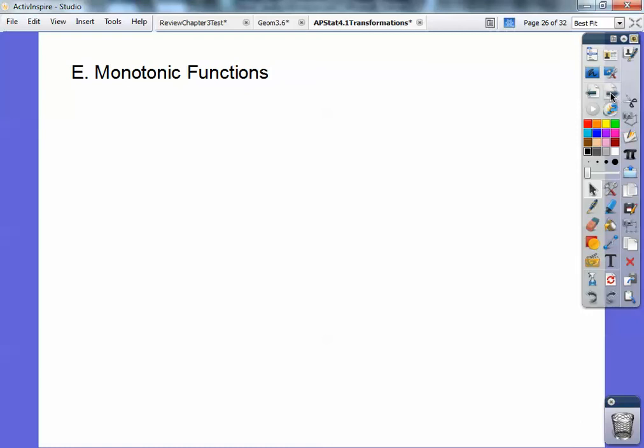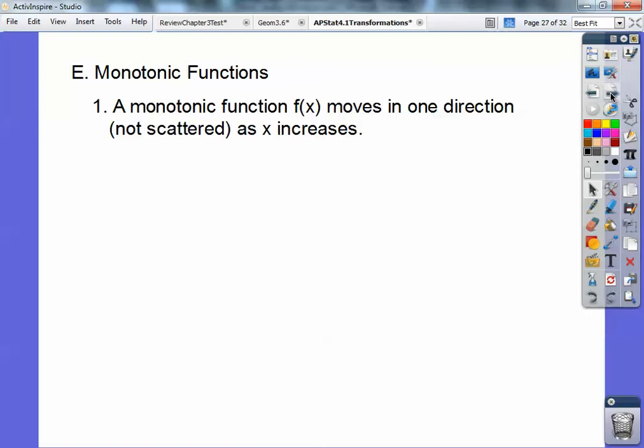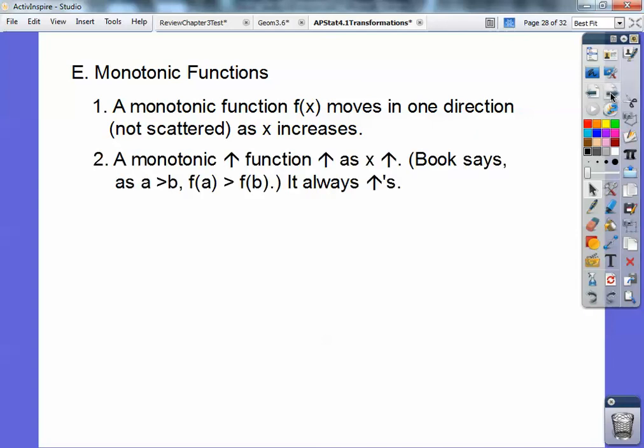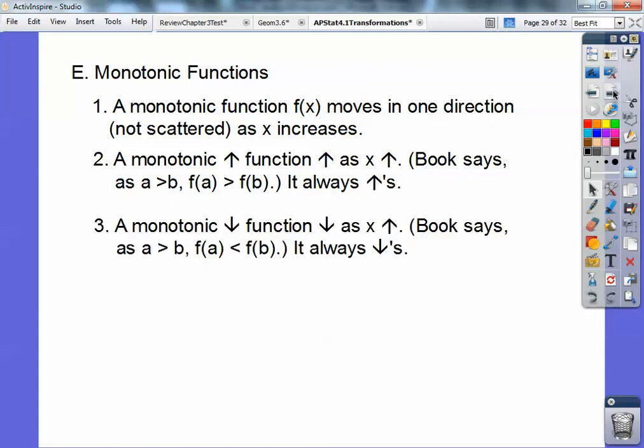A monotonic function moves in one direction, so it either goes up or goes down as X increases. If it goes up and down, it's not monotonic. A monotonic increasing function increases as X increases. It's going up basically. Your book will say as A gets bigger than B, which just means as X increases, then f(a) is bigger than f(b), which just means as Y increases. It just means it increases. So as X increases, so does Y, or so does f(x).